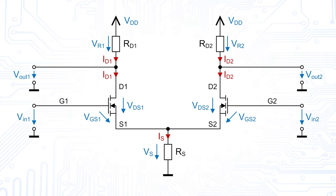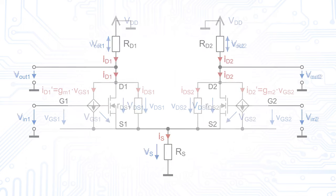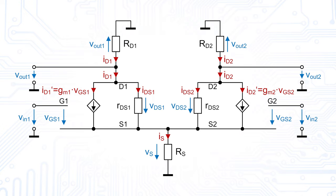For a practical example, we will start with the calculation of the differential mode gain. As a first step, we need to draw the small signal equivalent circuit of our differential amplifier. If you are not sure how to do this, we highly recommend to watch our video on small signal equivalent circuits, which is linked in the video description. Let's check out what we can simplify for this calculation. Assuming that for small signals the voltage change is the same on both sides of the circuit but in opposite directions, we can assume that our current IS remains nearly constant. This means that there is no small signal current through the resistor RS and thus no small signal voltage drop. Therefore, we consider RS to be a short and use a small signal ground connection instead. Knowing this, we can redraw our small signal equivalent circuit.